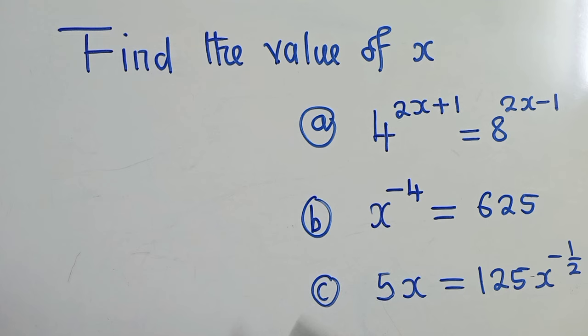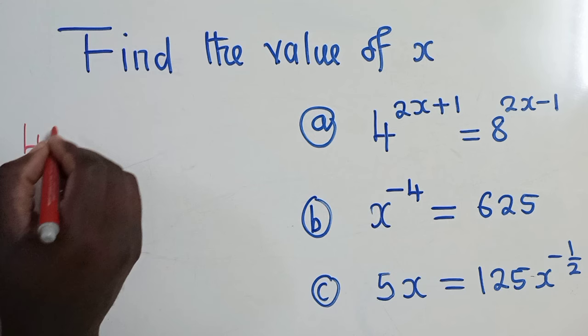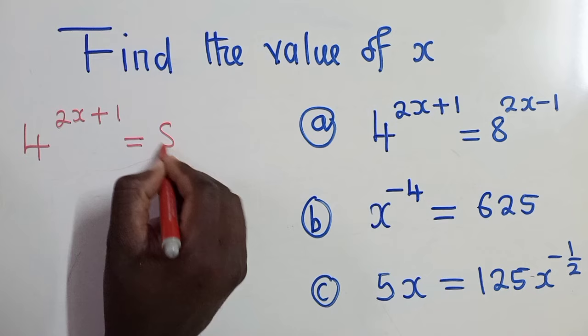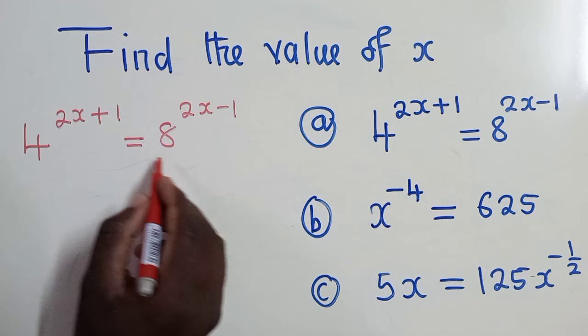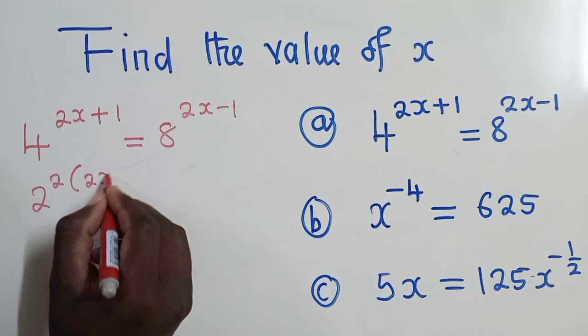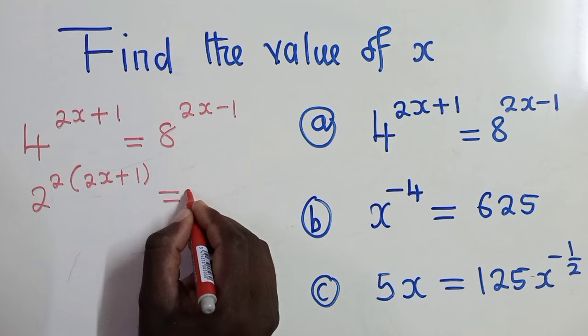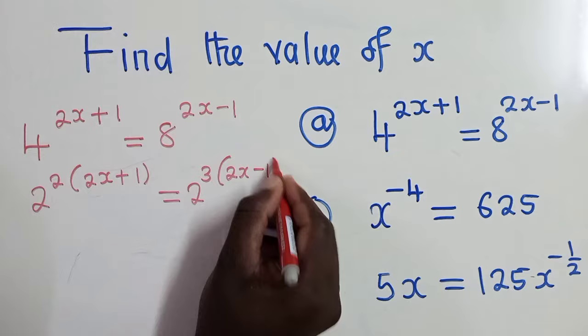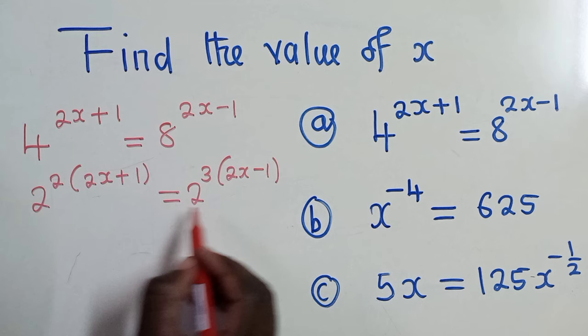The first one here, we have 4 power 2x plus 1 is equal to 8 power 2x minus 1. So the first step here must be to balance the bases. We shall have a 2 here, power 2, open bracket, 2x plus 1 inside the brackets there, equal to 2 power 3, open bracket, 2x minus 1. So we have balanced the bases because 2 to the power 2 is 4, 2 to the power 3 is 8.